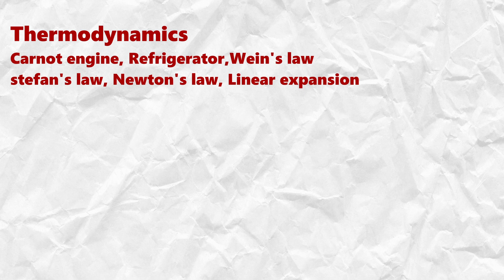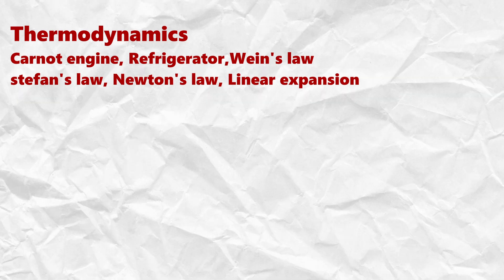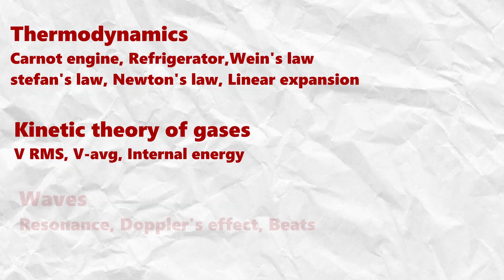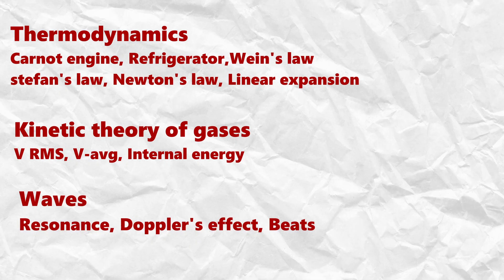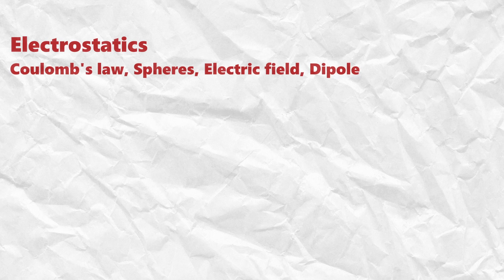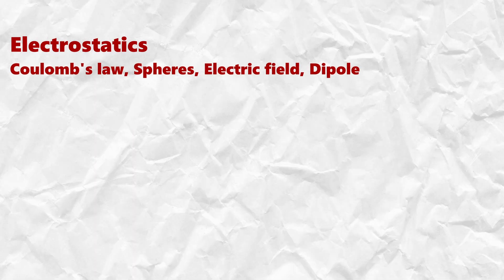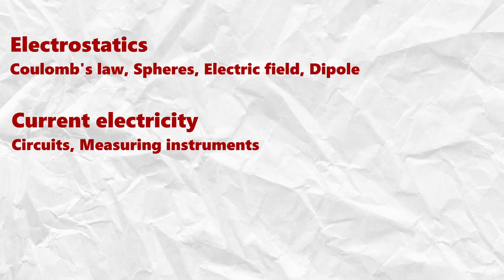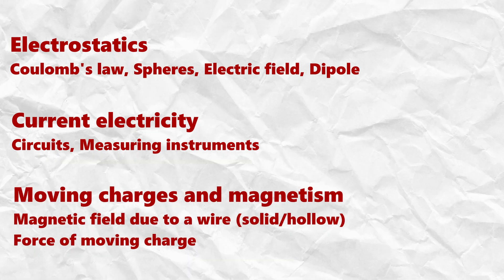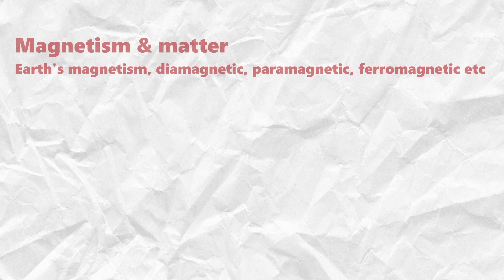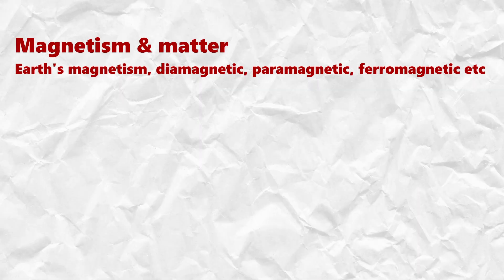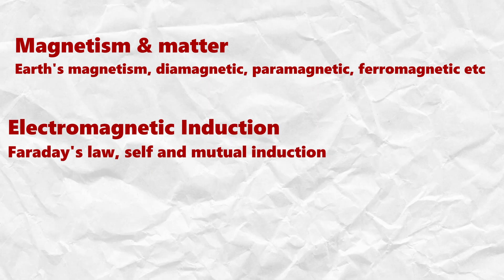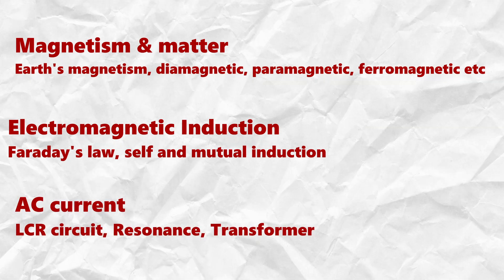Thermodynamics: Carnot Engine, Refrigerator, Wien's Law, Stefan's Law, Newton's Law of Cooling, Linear Expansion. Kinetic Theory of Gases: V-RMS, V-Average, Internal Energy. Waves: Resonance of Open and Closed Pipes, Doppler's Effect, Beats. Electrostatics: Coulomb's Law, Electric Field, Spheres, Dipole. Current Electricity: Circuits, Measuring Instruments like Meter Bridge, Potentiometer, Voltmeter. Moving Charges and Magnetism: Magnetic Field due to a Wire, Force on Moving Charge. Magnetism and Materials: Earth's Magnetism, properties like Diamagnetic, Paramagnetic, Ferromagnetic. Electromagnetic Induction: Faraday's Law, Self and Mutual Induction. AC Current: LCR Circuit, Resonance, Transformer.